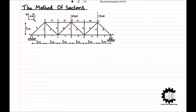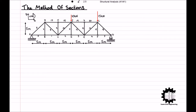The method of sections is great for solving larger truss structures quickly and simply. Consider a truss in equilibrium, supported by a hinge at point A and a roller at point G. Every horizontal and vertical bar is five meters long, and using Pythagoras' theorem each diagonal bar is approximately 7.07 meters in length. All bars are connected via hinges. There is a vertical downward load of 10 kilonewtons at node J and a vertical downward load of 15 kilonewtons at node L. We will use the method of sections to determine the internal forces in bars 3, 12, and 19.